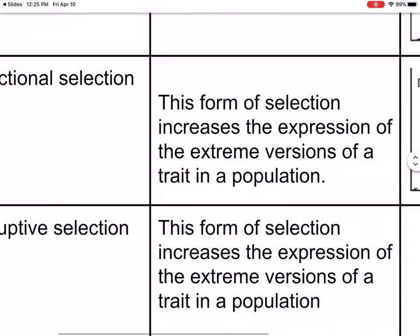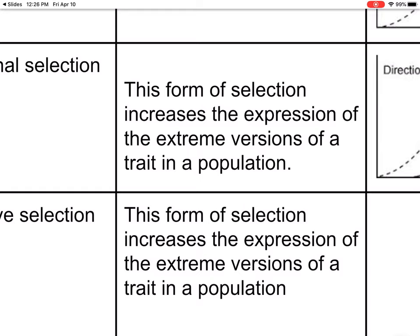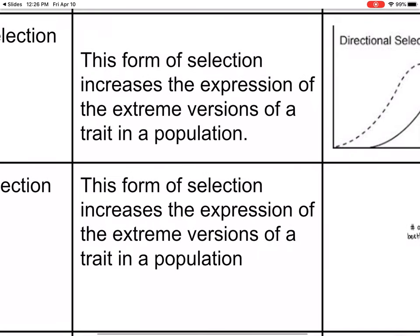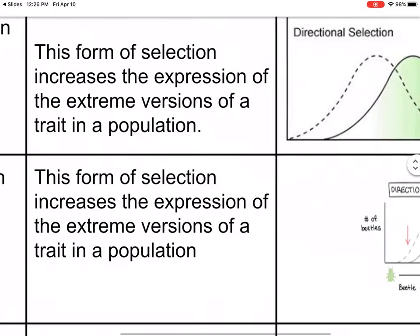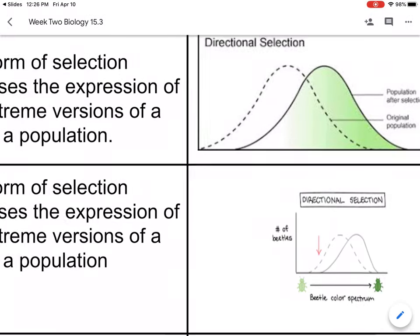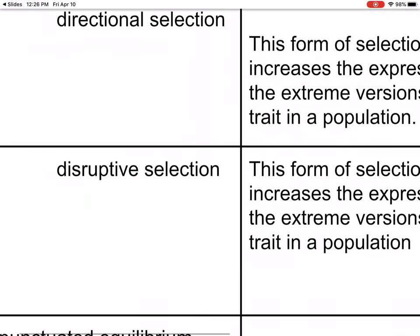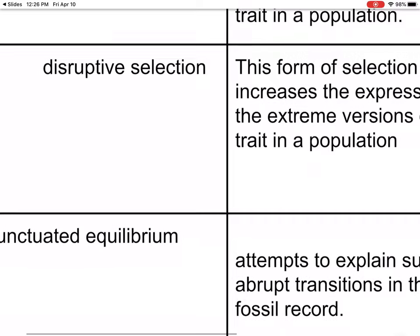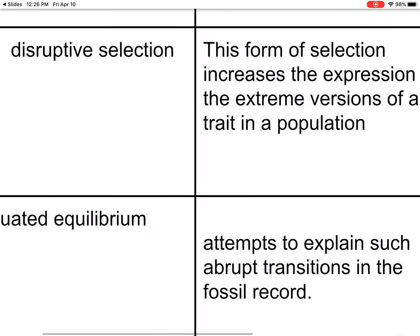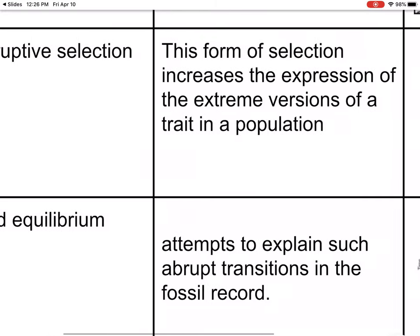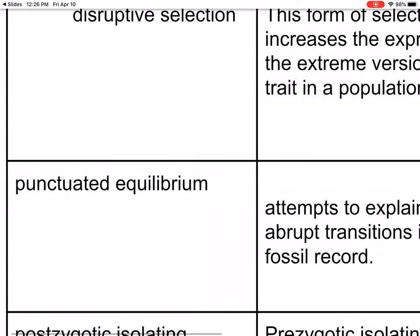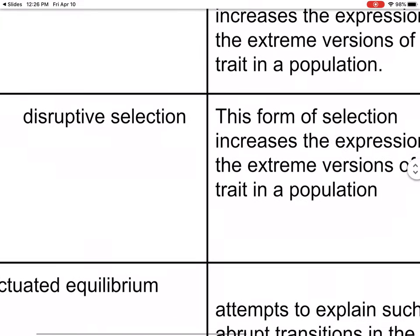Directional selection: this form of selection increases the expression of extreme versions of a trait in a population — so maybe the extreme is good for fitness. Disruptive selection also increases the expression of extreme versions — I notice I accidentally wrote that one twice, so I'll skip that.